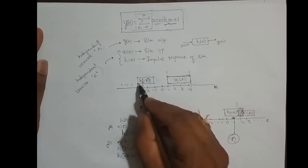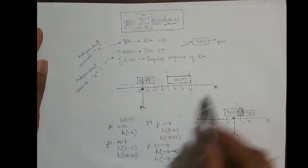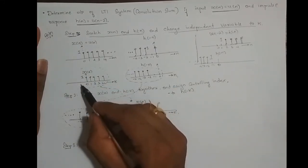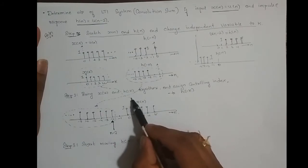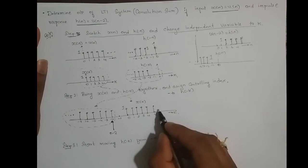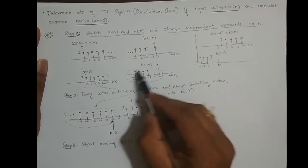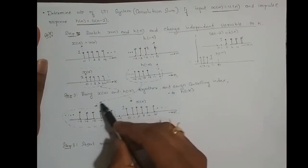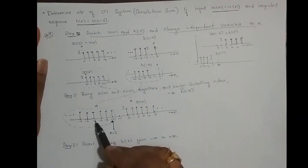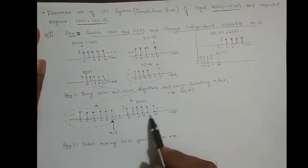x(k) does not move — it remains in that fixed position — whereas h(-k) has the liberty to move. That is what I explained in the previous video. The x(k) sequence starts from 0 and ends at k equal to infinity. And h(-k) is kept at its position from minus 2, minus 3, minus 4, till minus infinity.